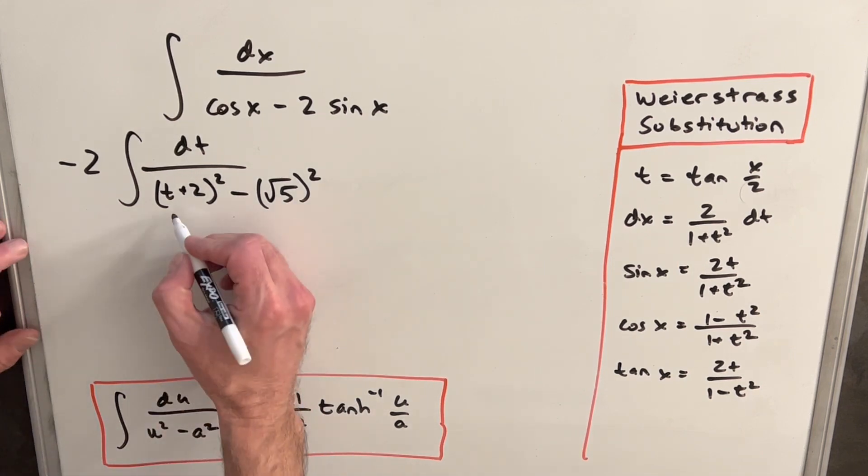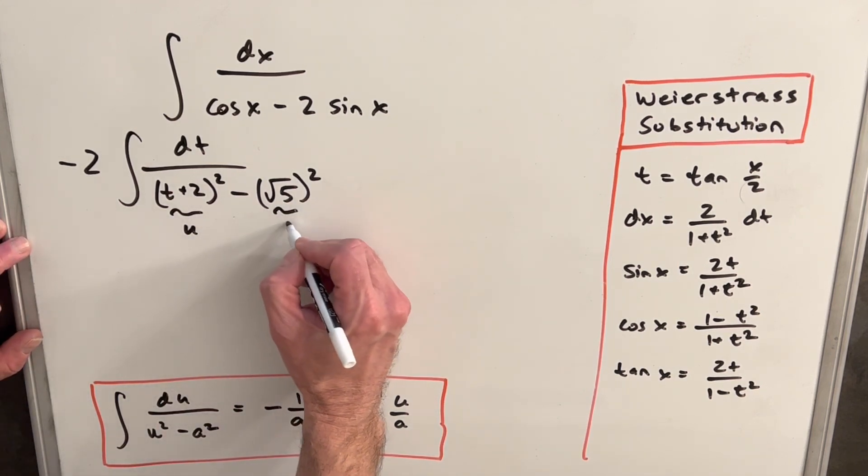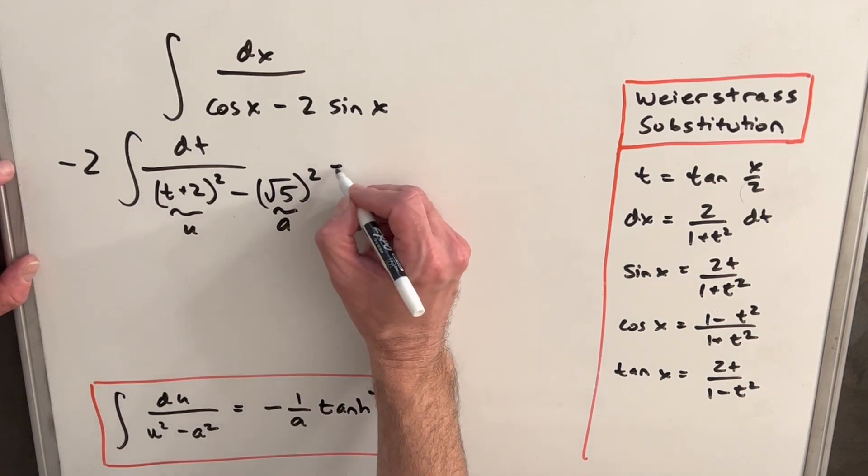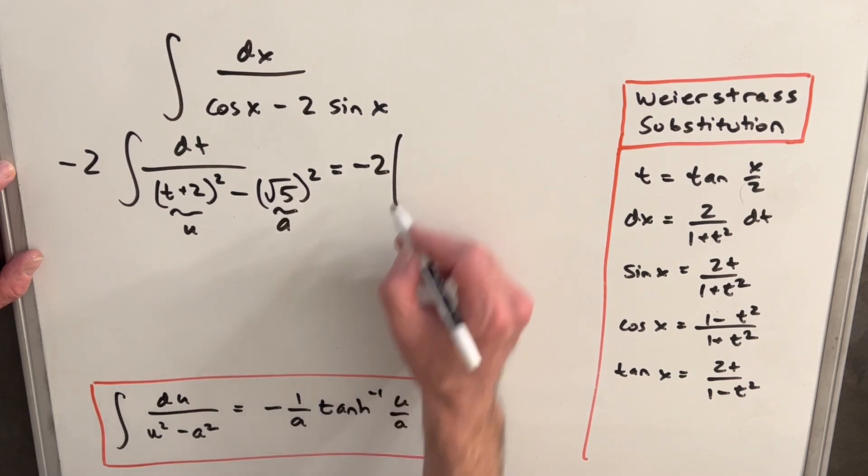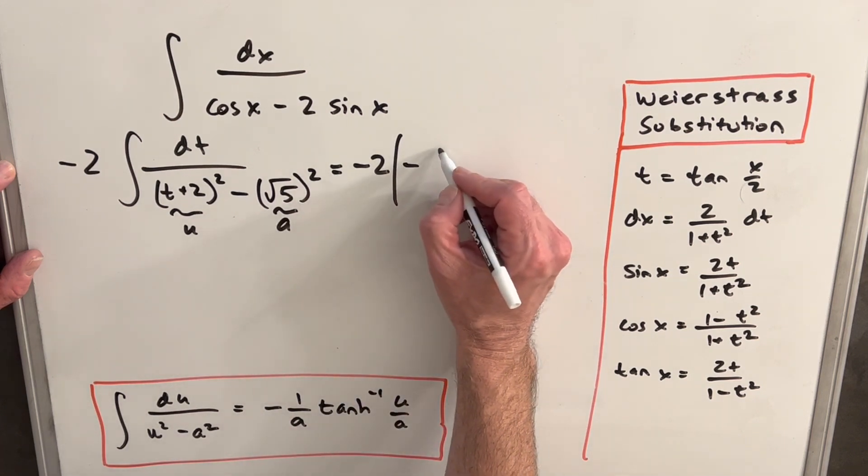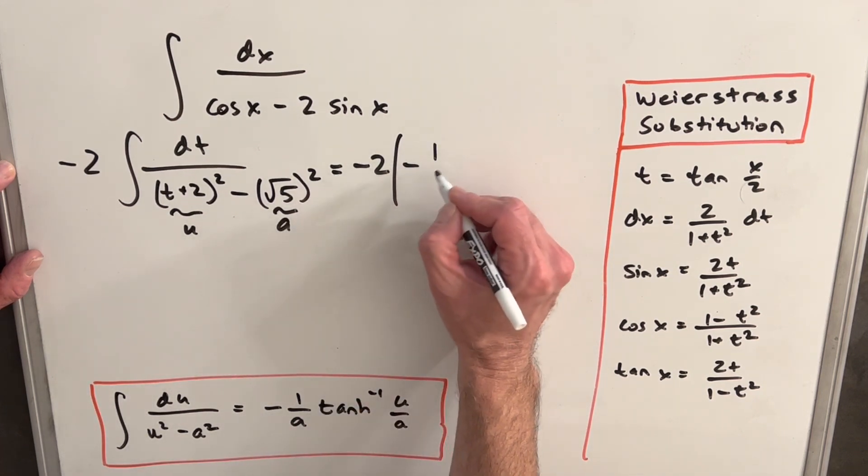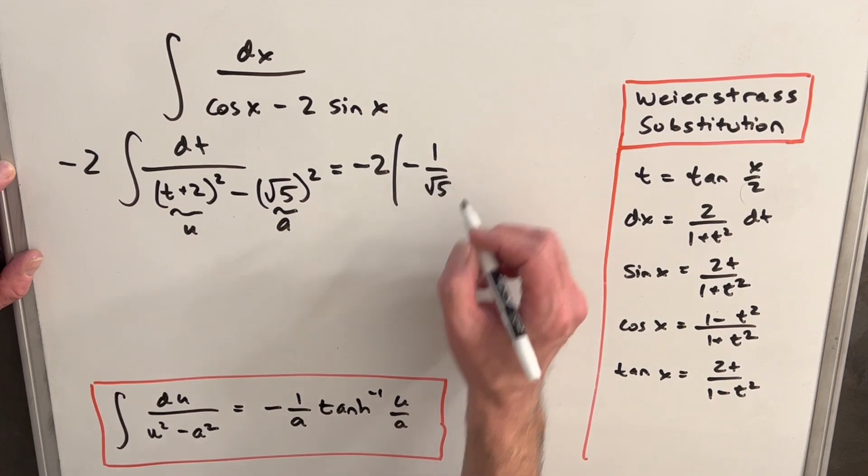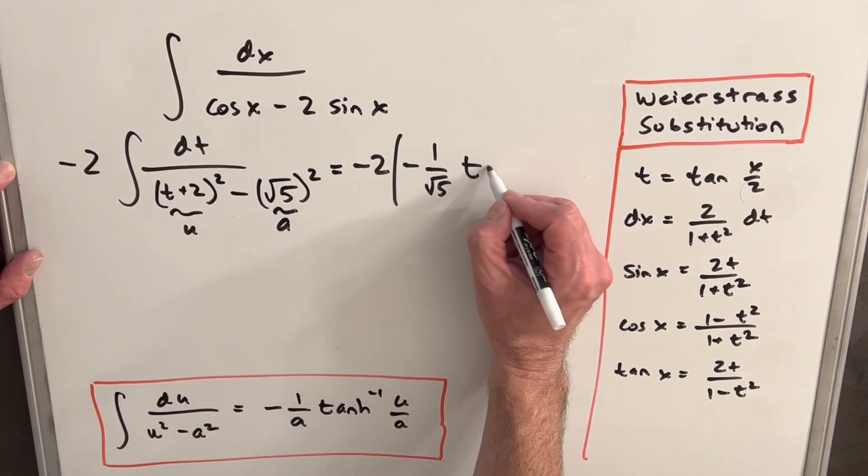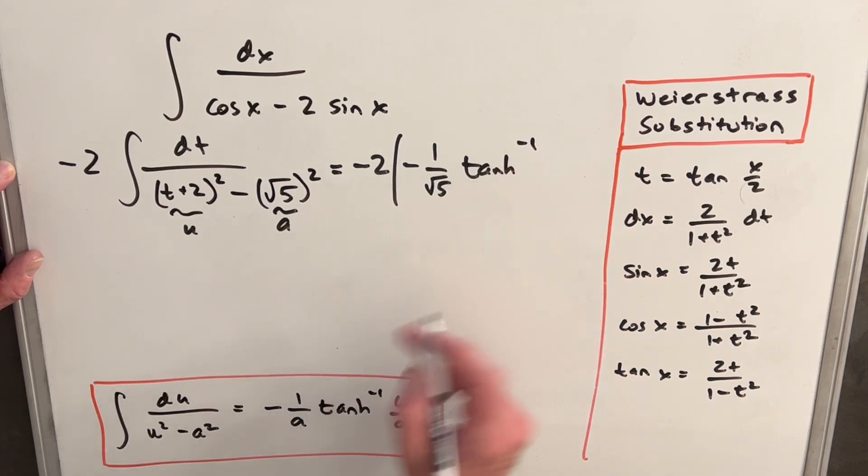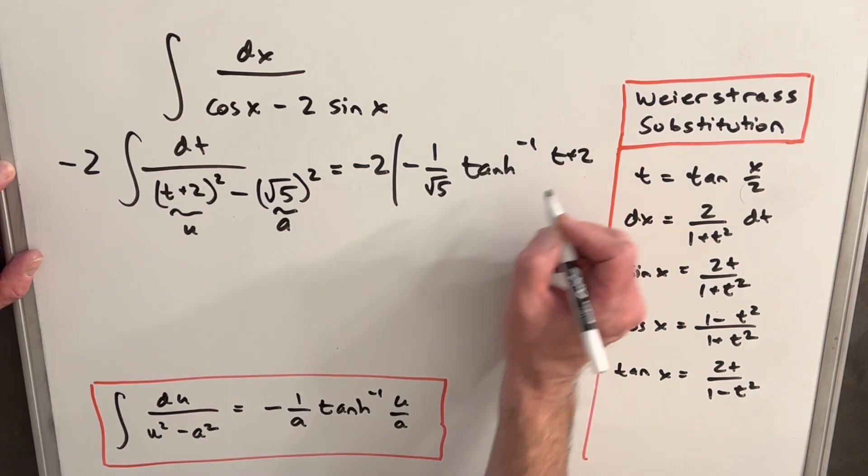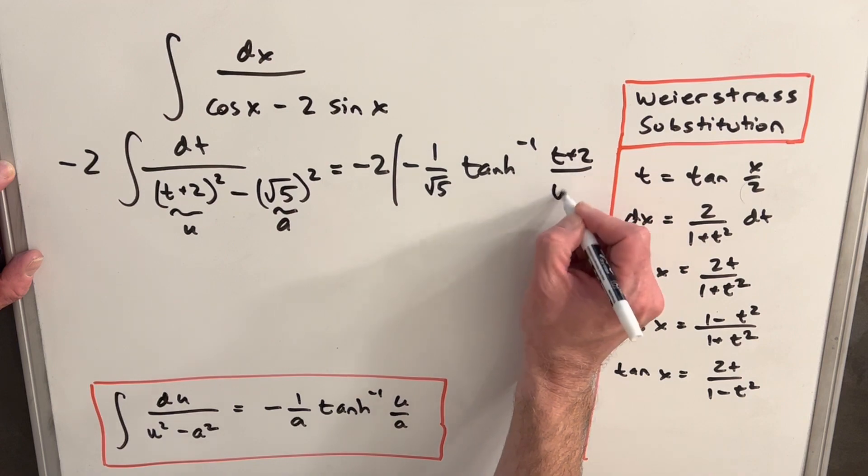This will be like our u and this will be like our a. So we can just plug in values. We'll have our minus 2 in front. Then we're going to have 1 over a, a being square root of 5. Then we'll have hyperbolic inverse tangent. Our u is going to be t plus 2, and then our a is again square root of 5.